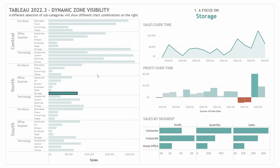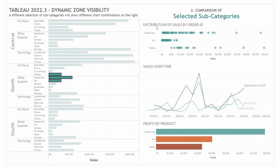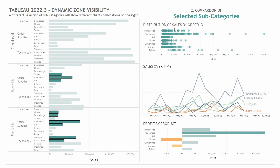The next scenario, number two, is going to be looking at comparing products. So let's say we select a few products — this time we have all those products coming into the view and the title changes to be a comparison. You can go on and select a few more and they'll come into the view as well. This is our second scenario with a different set of charts on the right-hand side.